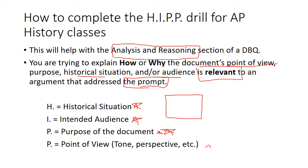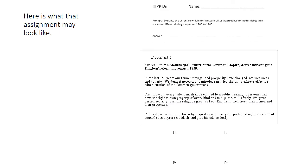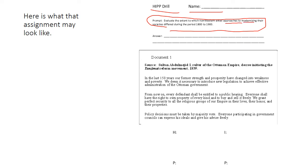The best way to do that is to always have a prompt. If you're trying to do this drill without a prompt to associate with, you're really going to force a lot of writing and forced thinking and maybe lead yourself down some rabbit holes. You certainly don't want to take that approach into the test or when you write a DBQ in class. So here's what this might look like: the prompt asks how did non-elites approach modernizing their societies from 1800 to 1900.